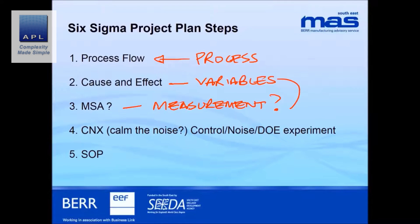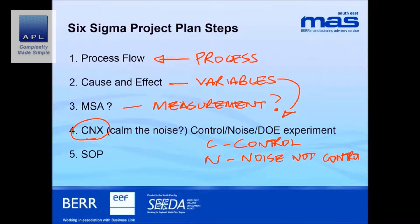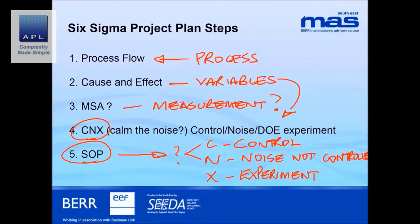Once we've found the variables, we identify them as C, N, or X. C means they are under control — good. N means they are noise, or not controlled — typically a bad thing. X means we'd like to understand them more, so we'll experiment on them. We turn the N's into C's using standard operating procedures. That's the traditional approach, but because this is a finished assembly failing an end-of-line test, we first have to ask: is it the process or the parts?